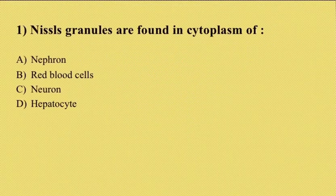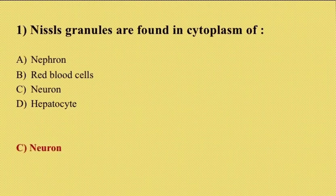First question: Nissel's granules are found in the cytoplasm of option A nephron, option B red blood cells, option C neuron, option D hepatocyte. The answer is neuron. Nissel's granules are large granular bodies found in neurons, very useful for protein synthesis and also help to transport these proteins to the cytoplasm.